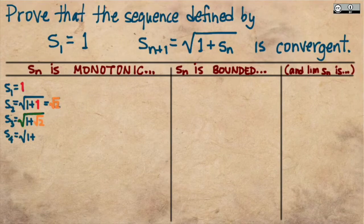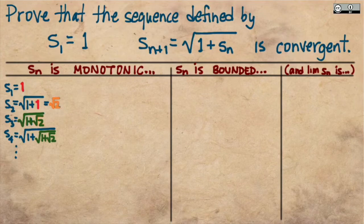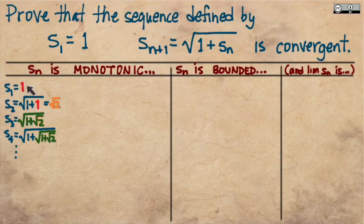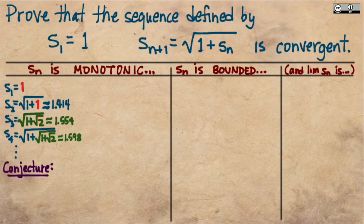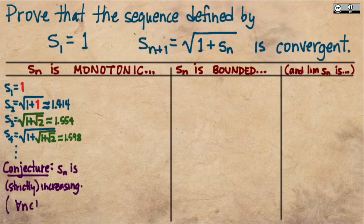Monotonicity is difficult if we don't know which direction the sequence is going, so let's look at the first few terms to get a sense. The first term is one, the second is the square root of two, the next is the square root of one plus radical two, and so on. Looking at some decimal expansions of these first four terms convinces us we're seeing an increasing pattern. So it's reasonable to conjecture that this is in fact a strictly increasing sequence — that for all natural numbers n, the (n+1)th term is strictly greater than the nth term.